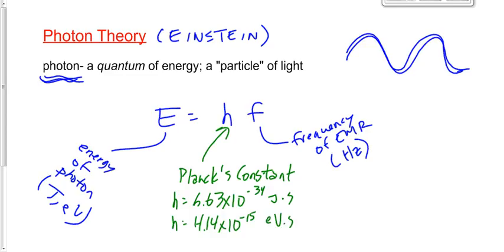Which one do you use? Well, it depends on what you want your units for energy to be in. I got an energy in joules. Then I want to use this Planck's constant. I got an energy in electron volts. Then I want to use this value of Planck's constant.